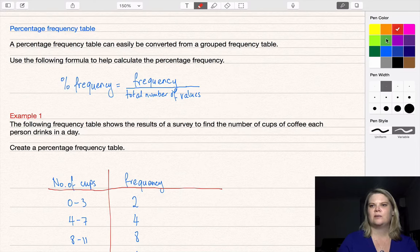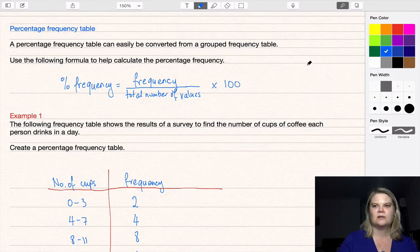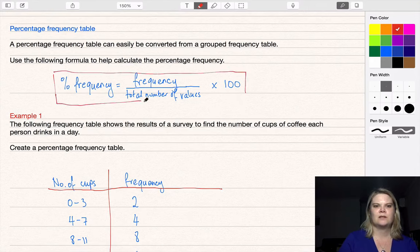The following formula can help you calculate the percentage frequency. Percentage frequency equals frequency divided by the total number of values times 100. I'm going to put a big red box around that formula so we can clearly see and remember it.